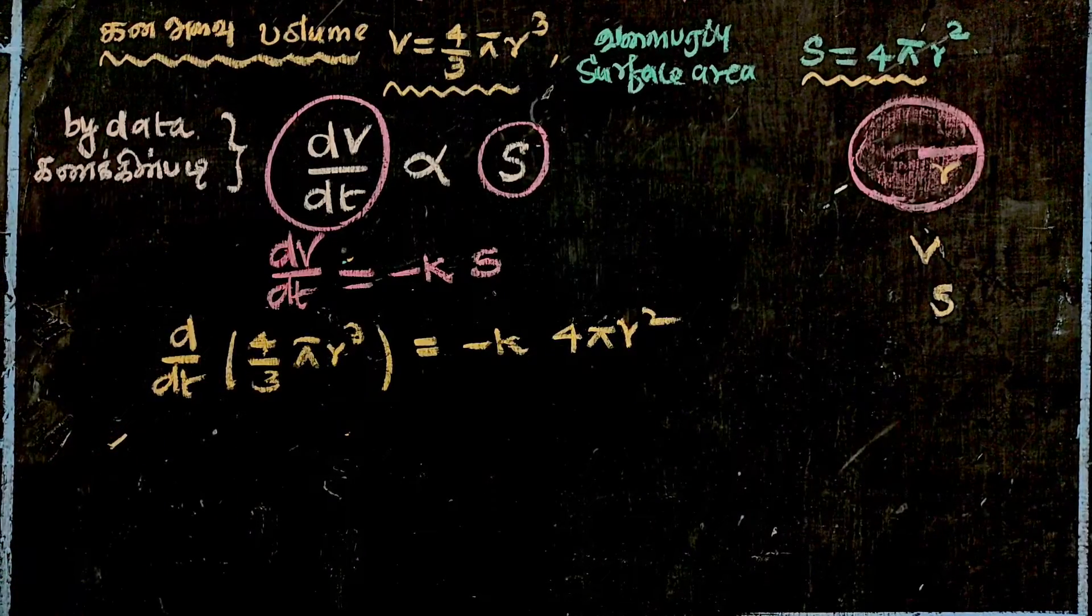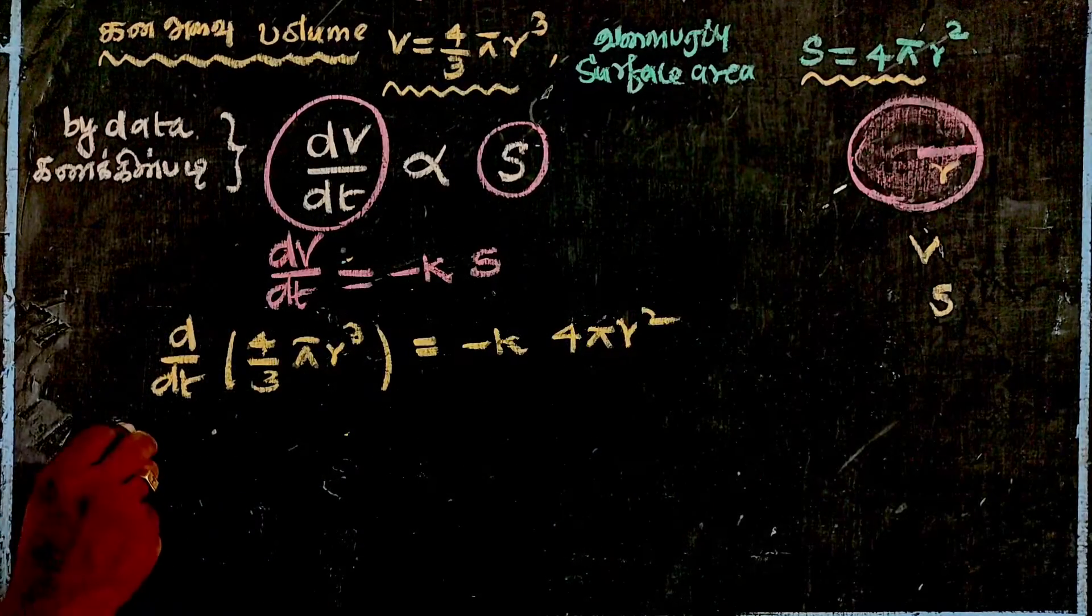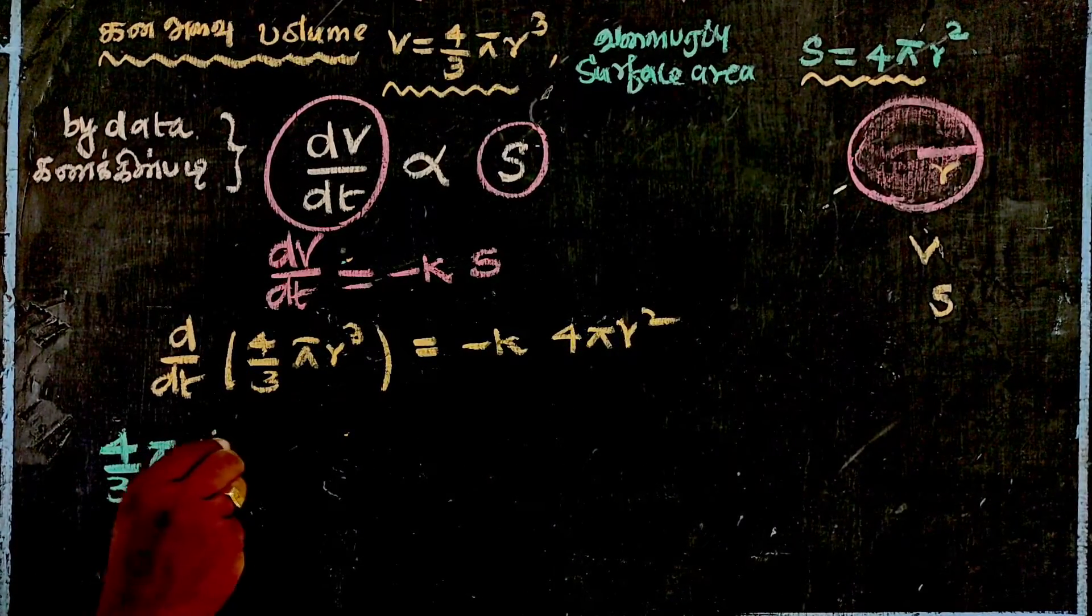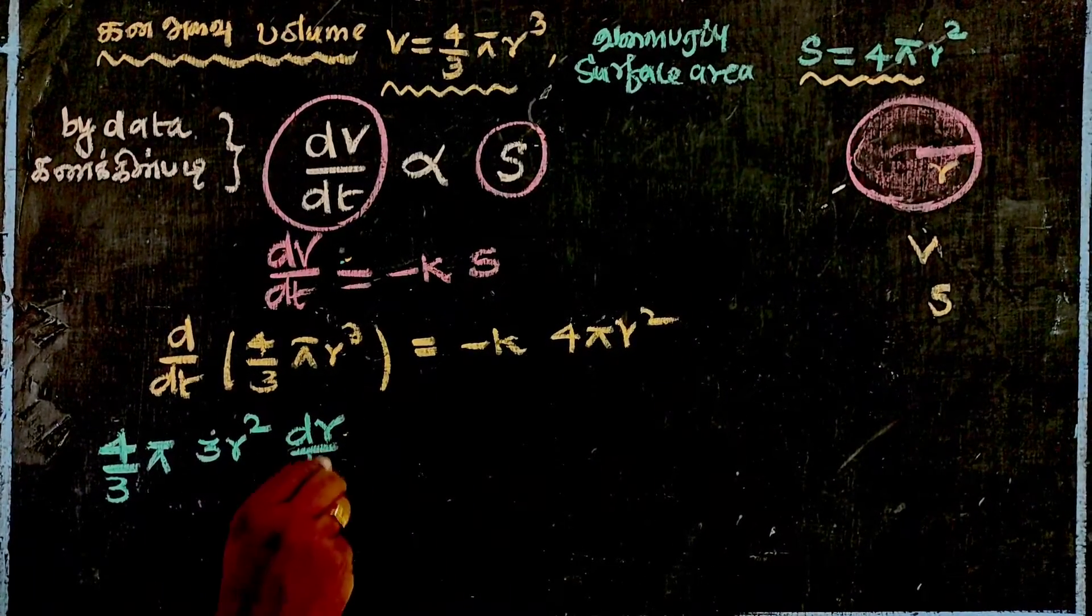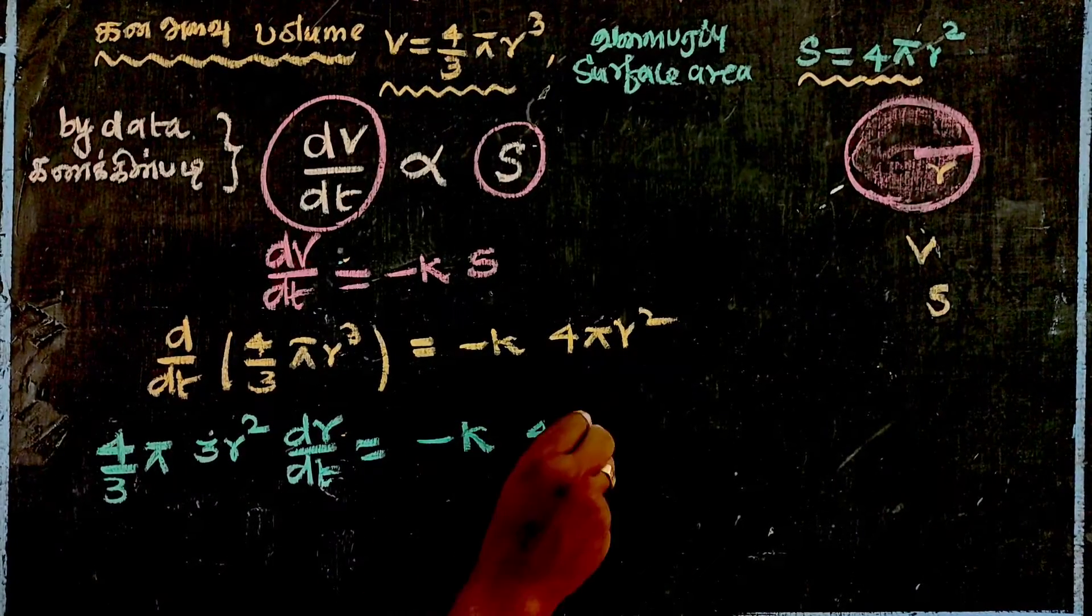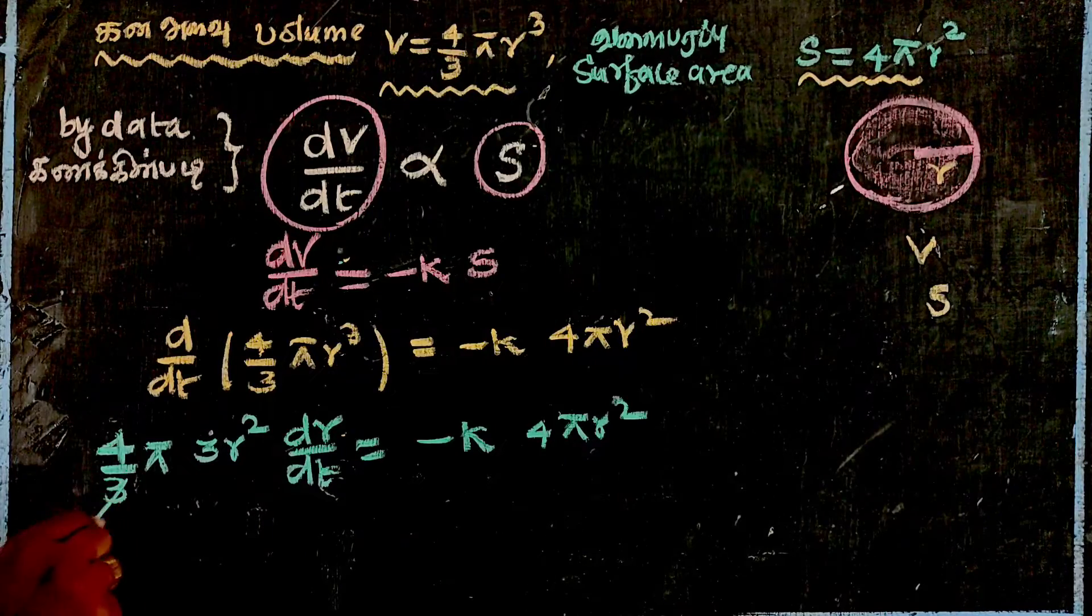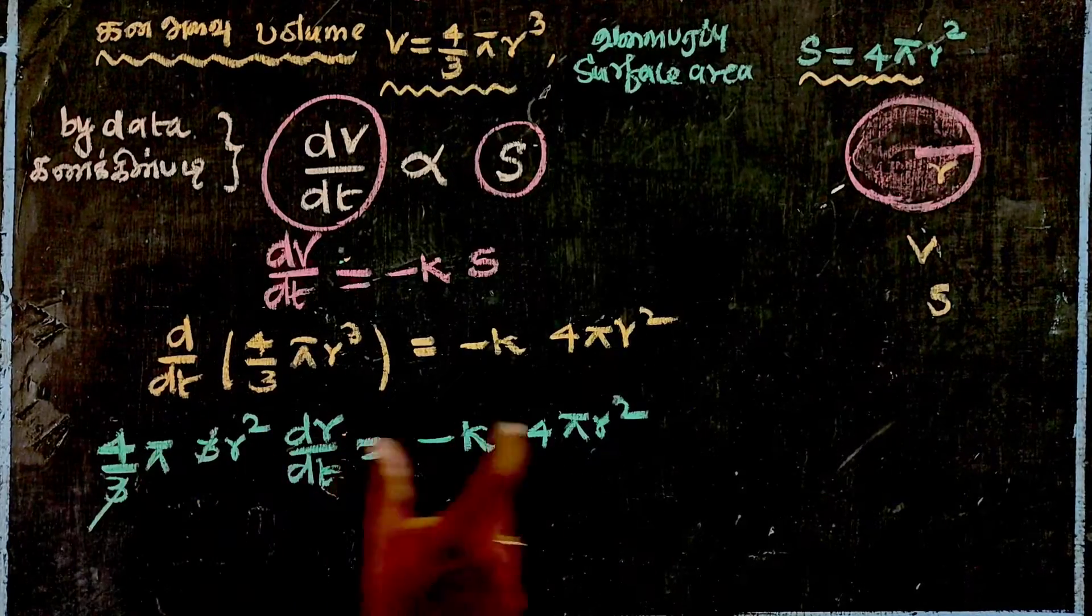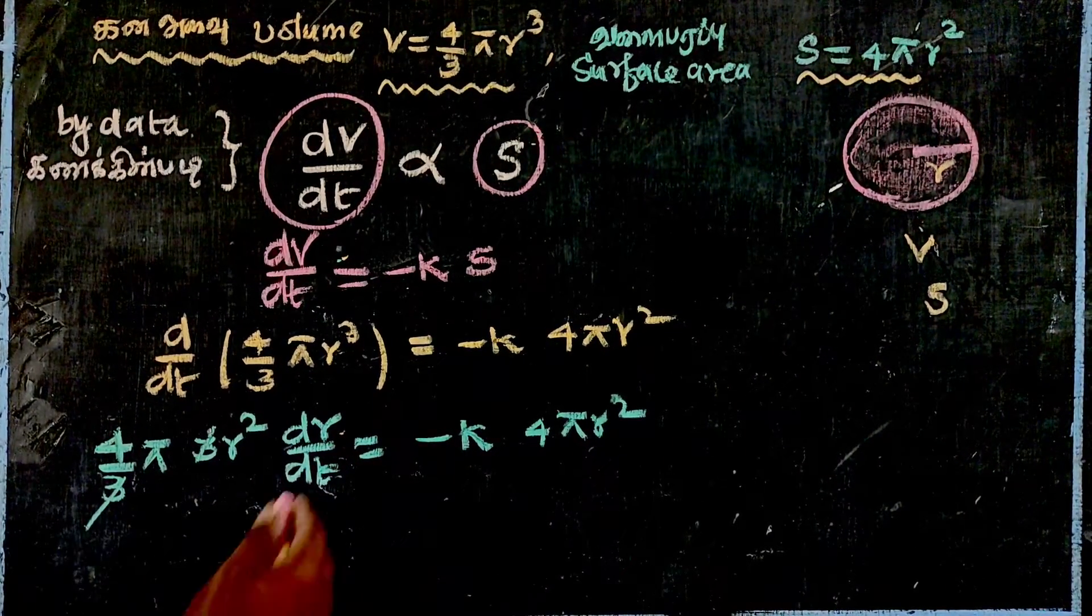4 by 3 pi r cubed differentiated gives 4 by 3 pi times 3 r squared times dr/dt equals minus k times 4 pi r squared. The 4 pi r squared terms cancel out.